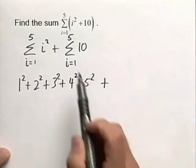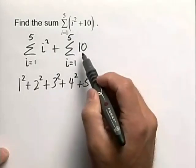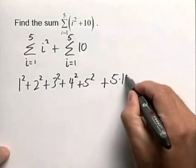Now we're going to take that plus the summation of i equals 1 up to 5 of 10. We know a property: if we're taking the summation of a constant, we can simply take the 5 times the 10.